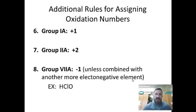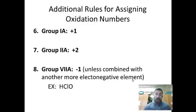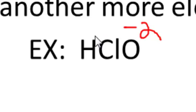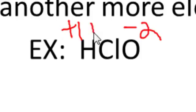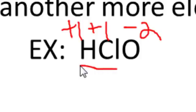Additional rules: looking at the periodic table, Group 1A — sodium, lithium, potassium, rubidium, cesium — are all plus one. Group 2A — magnesium, calcium, barium, strontium — are all plus two. Group 7A — fluorine, chlorine, bromine, iodine — are all minus one, except when bonded to a more electronegative element. For example, in HOCl, oxygen is most electronegative so it's minus two; both hydrogen and chlorine are positive one.